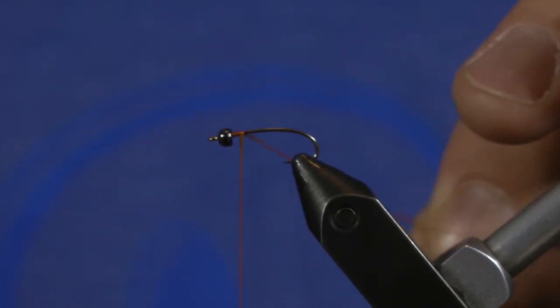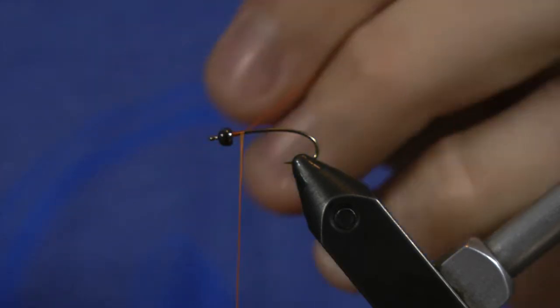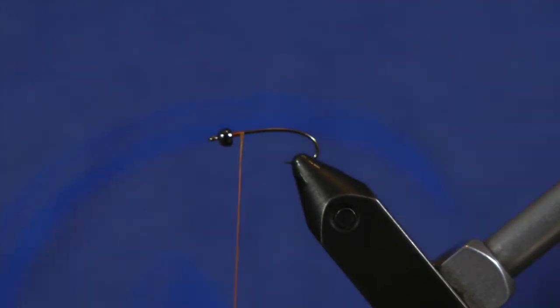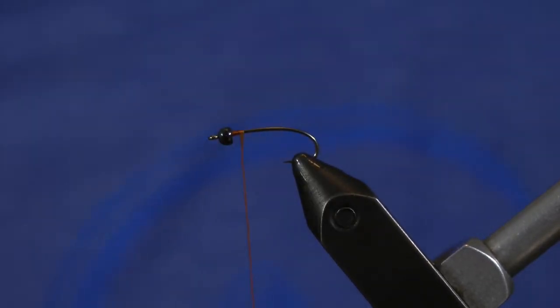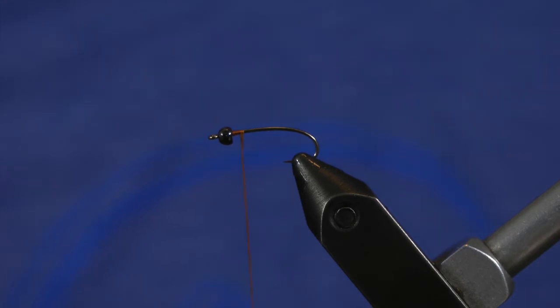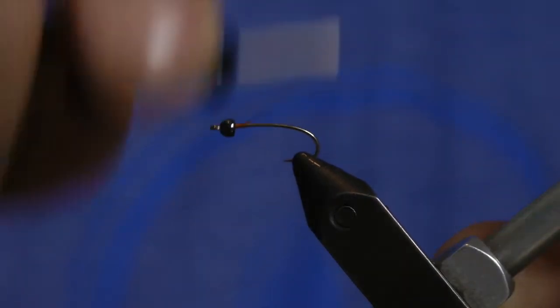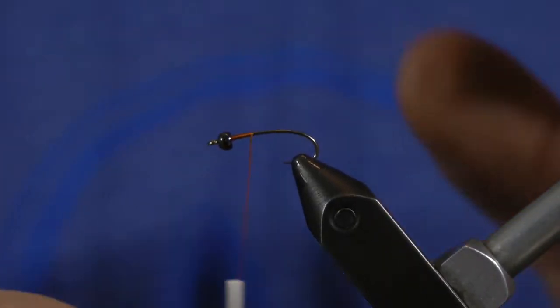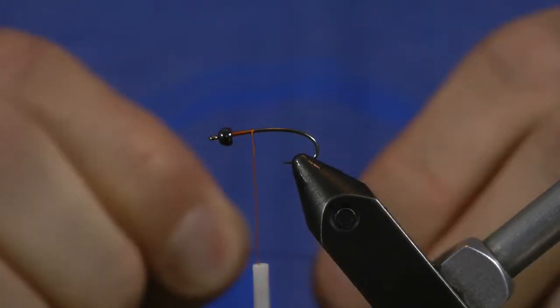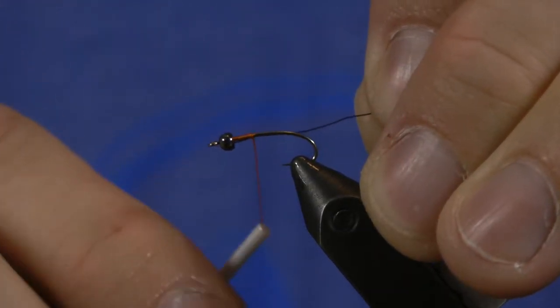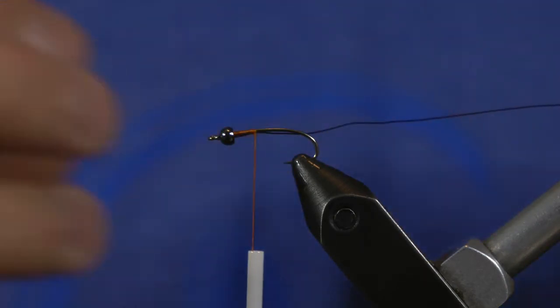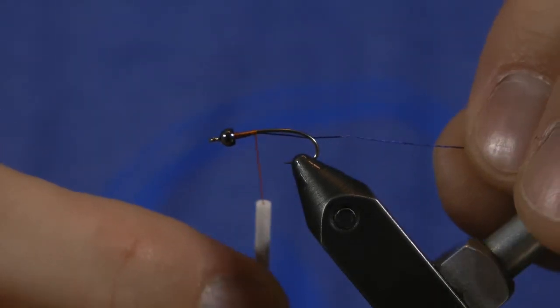Basically, this bug is tied on a slight curve hook. I'm tying it on a size 14 and I use an undersized tungsten bead, so this is a 3/32nds bead. One of the goals of this fly is a prospecting nymph. You can tie it in tons of different colors, and the goal is to maintain a really sleek and slim body profile.